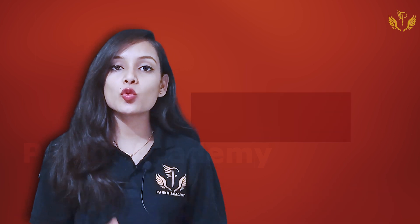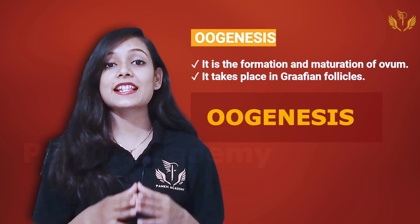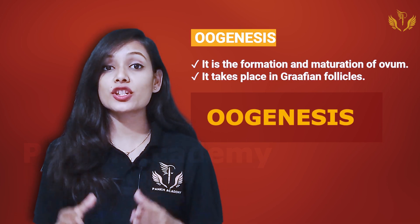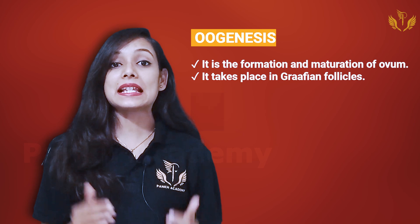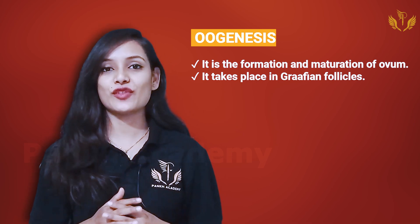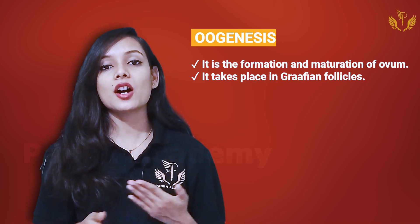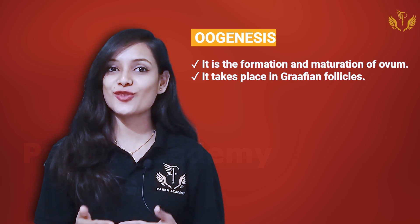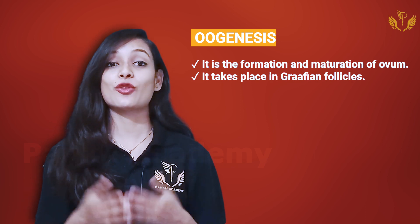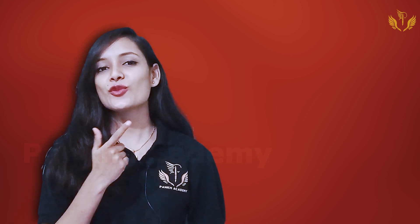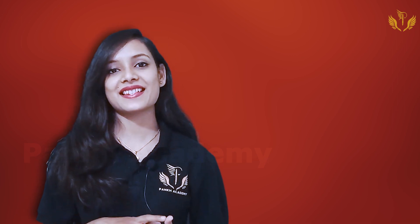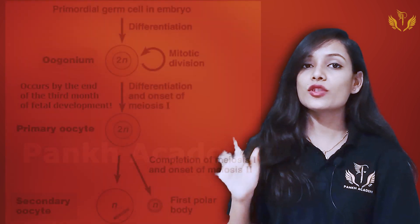So let's get started. What is oogenesis? Oogenesis is the formation and maturation of ovum, and this occurs inside the Graafian follicle. Ovum formation and maturation — we call it oogenesis, and it takes place in the Graafian follicle.